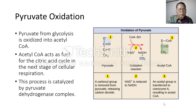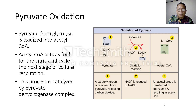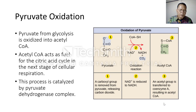Let's review pyruvate oxidation. In the glycolysis pathway, glucose is converted to pyruvate. A carbonyl group is snipped off pyruvate and released as carbon dioxide, leaving behind a two-carbon molecule. This two-carbon molecule is oxidized and the electrons lost in the oxidation are picked up by NAD+ to form NADH. Then an acyl group is transferred to coenzyme A, resulting in acetyl-CoA.